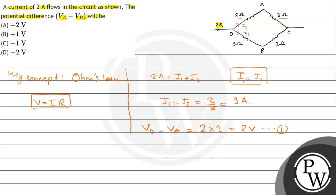This is our equation 1. And in the lower side, you can see that Vd minus Vb equals 1 volt.